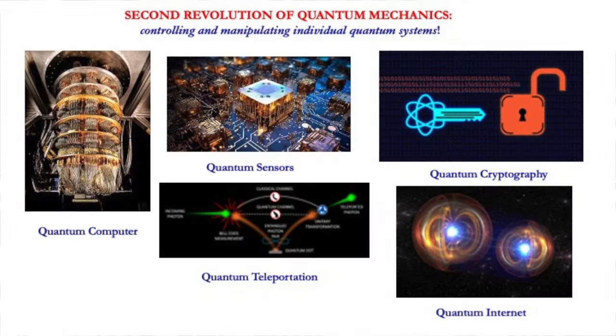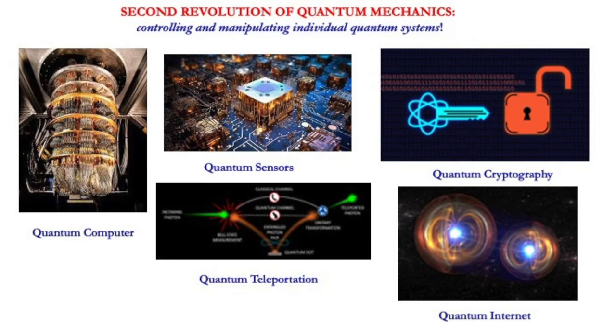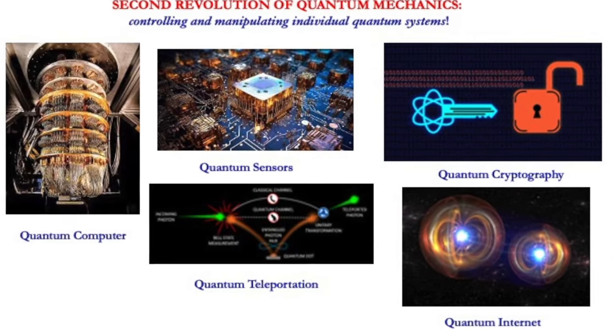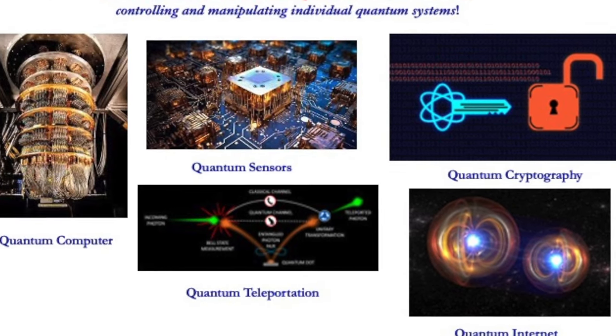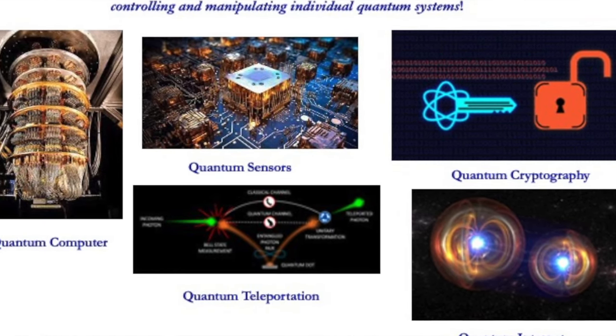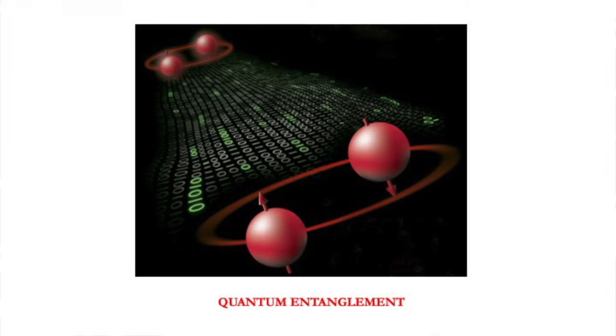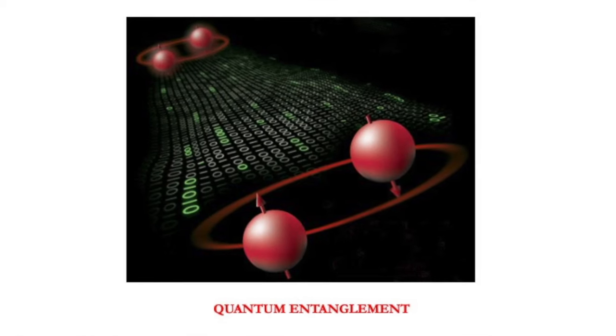Now, we have come to a stage where it is possible to manipulate and control individual quantum systems. And because of that, it is said that we are now in the beginning of the so-called second quantum revolution. And in all such technological advancement, in particular this new generation of quantum technology, quantum entanglement is going to play the most vital role.